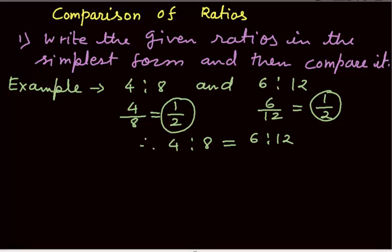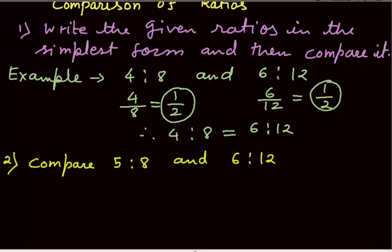Now, let us consider another example. Compare 5 is to 8 and 6 is to 12. Here you can see that 5 is to 8 is already in the lowest form. I am just writing this 5 is to 8 in the form of a fraction. 6 is to 12, I can write it in the fraction as 6 over 12 and the simplest form is 1 over 2.